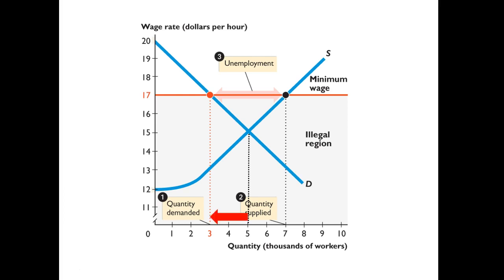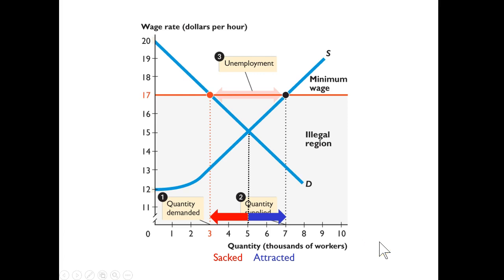This unemployment can be divided into two parts. First, there were 5,000 employed and now there are only 3,000 employed, so that's 2,000 workers who were let go. But that's not all of the unemployed — because the higher minimum wage also attracts more labor to the market, there are an additional 2,000 workers drawn in hoping to gain employment at the higher wage. So the sacked workers plus the newly attracted workers together give us the total amount of unemployment due to the minimum wage.